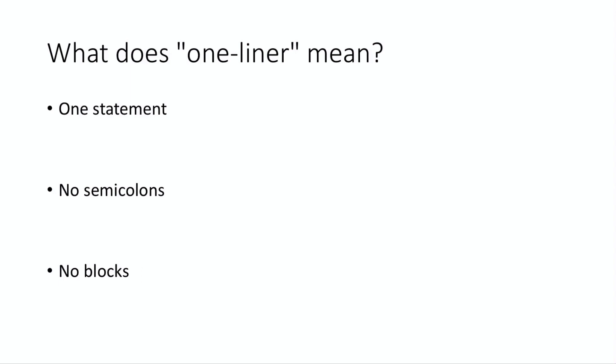To be clear, when I say one line what I really mean is one statement. Python does actually support semicolons. You could do something like x equals one semicolon print x. In Python semicolons are optional but if you want to have multiple statements on the same line you separate them by a semicolon. This is technically on one line but it's cheating because you could take any program and collapse it down into one line by putting a semicolon between every line.